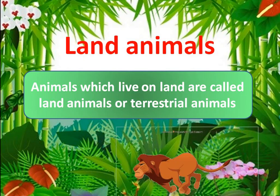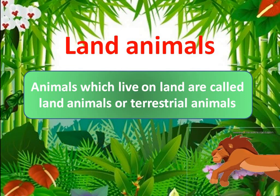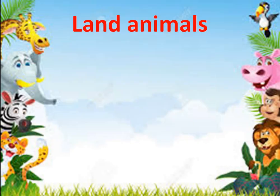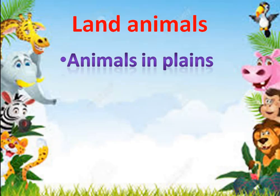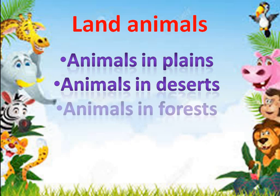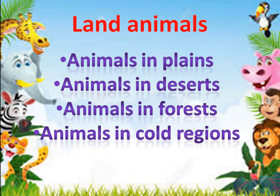Now, firstly, land animals. This time we will be covering only land animals. Land animals are the animals which live on land, and they are divided into four major categories: animals living in plains, animals in deserts, animals in forests, and animals in cold regions. We will be doing these animals turn by turn.